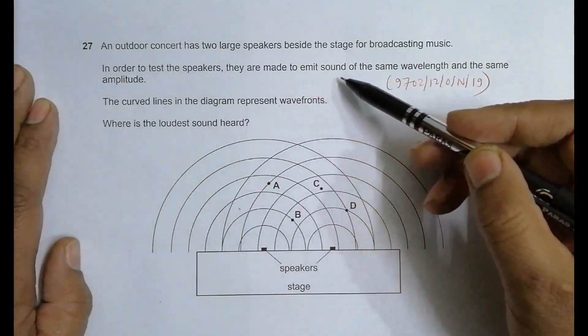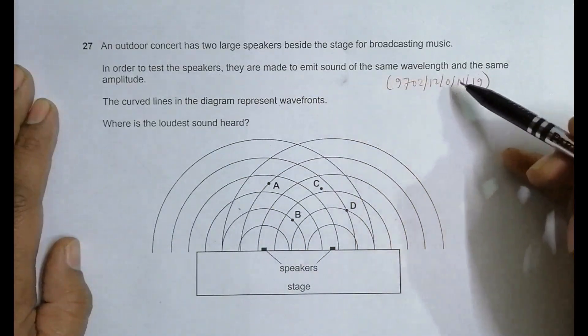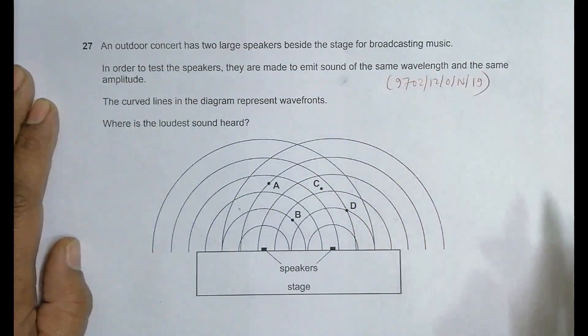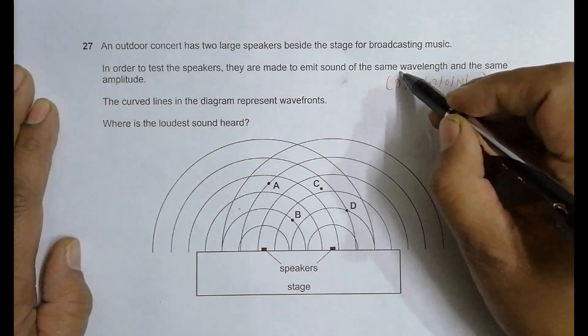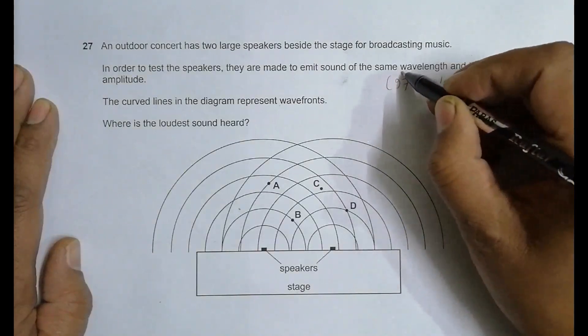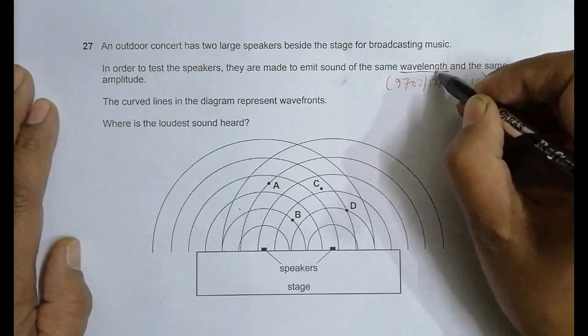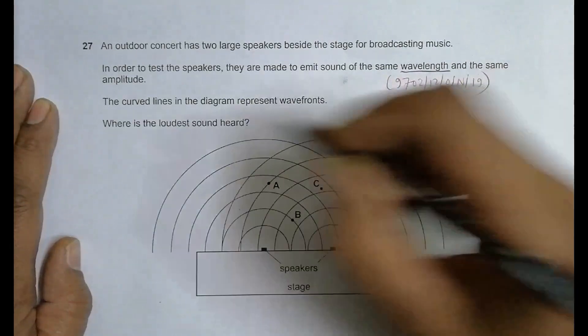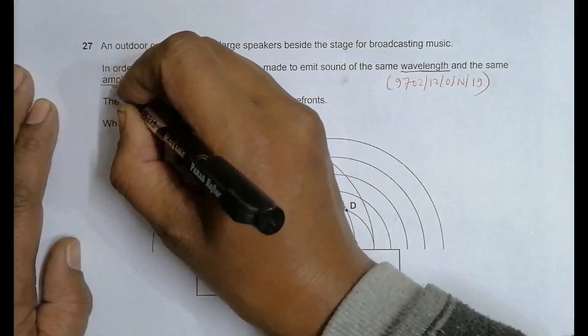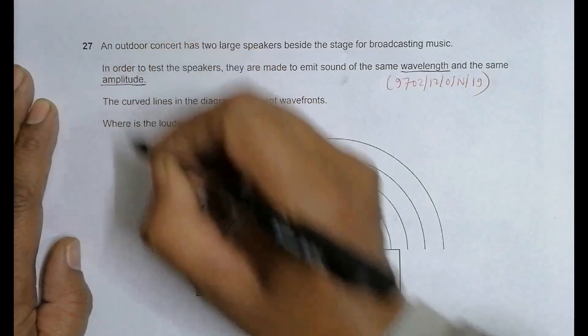In order to test the speakers, they are made to emit sound of the same wavelength and the same amplitude. This is what usually happens because the two speakers should be as identical as possible.